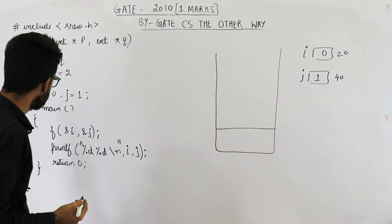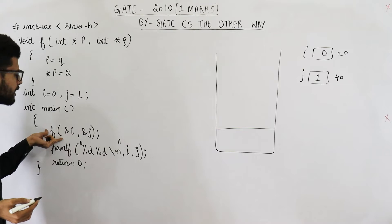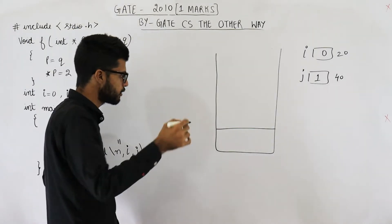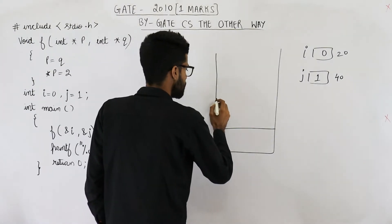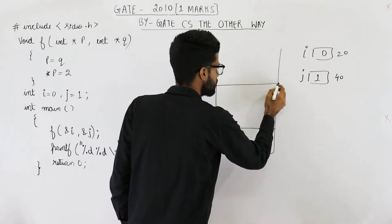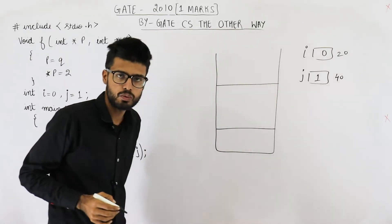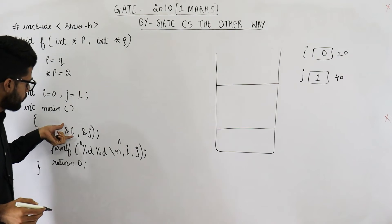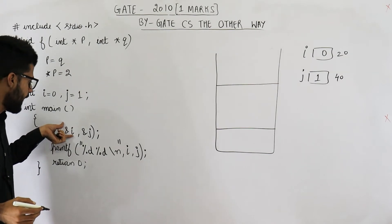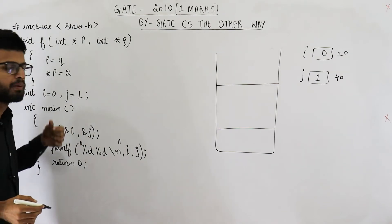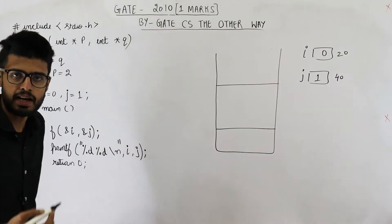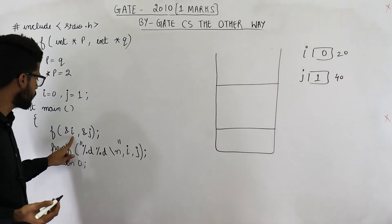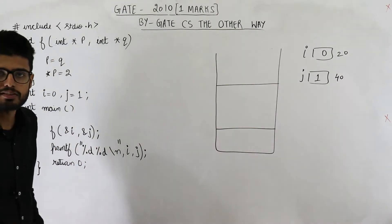The first line in the main function is trying to call one more function. Because we are calling the function, one more activation record corresponding to that function will be pushed onto the stack. To this function we are passing &i and &j — the ampersand is the address-of operator — so the address of i and the address of j are passed.